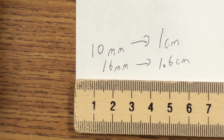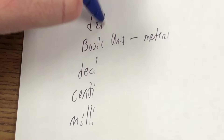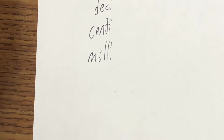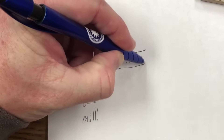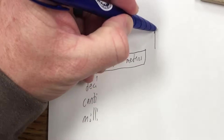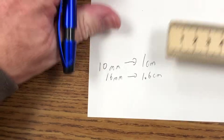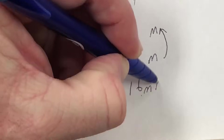If you remember, the prefix chart for distance looks like this. As we continue up or down this chart, that will determine how we move the decimal. You'll note in the middle are the basic units. If we go up the chart, we move the decimal to the left; if we go down the chart, we move the decimal to the right.